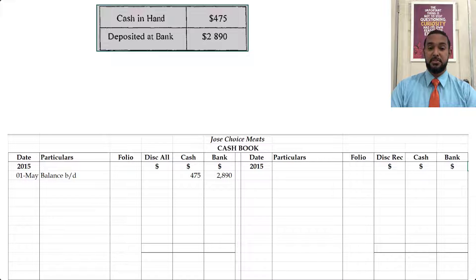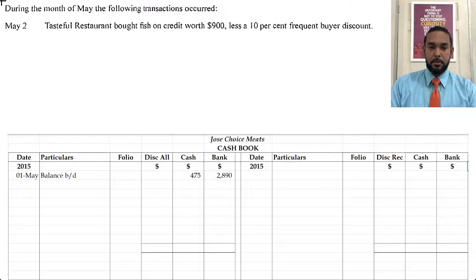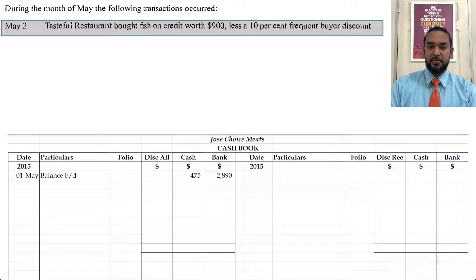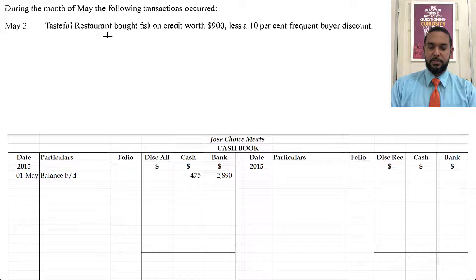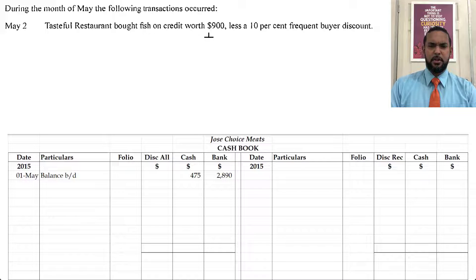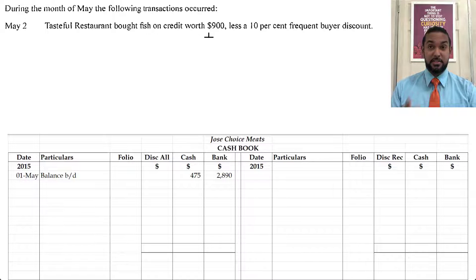Let's go through these transactions and see what goes on which side. On May the 2nd, Tasteful Restaurant bought fish on credit worth $900 less a 10% frequent buyer discount. Tasteful Restaurant is probably one of Jose's customers, and they bought fish on credit from Jose. If they bought fish from us on credit, it means we are selling to them on credit, which would need to be recorded in the sales journal — that's a credit sale. Credit sales are recorded in the sales journal, not in the cash book. So that transaction is not going to go in the cash book.